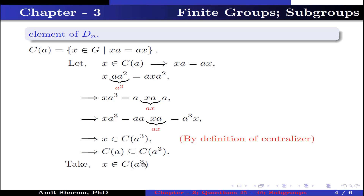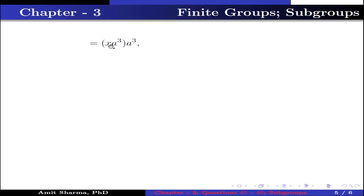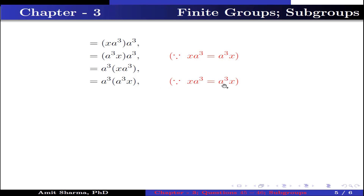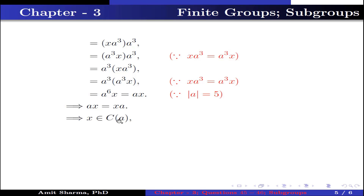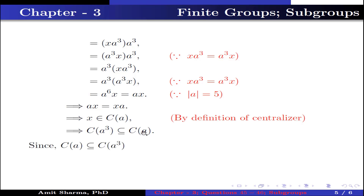Now take x belonging to the centralizer of A³, which implies xA³ equals A³x by the definition of centralizer. Then xA can be written as xA to the power 6, because the order of A is 5 — so A⁵ equals E, meaning A⁶ equals A. This equals xA³ · A³, which equals A³x · A³ (since xA³ equals A³x), which equals A³ · xA³, which equals A³ · A³x, giving A⁶x, which equals Ax since the order of A is 5. Therefore Ax equals xA, implying x belongs to the centralizer of A. Hence the centralizer of A³ is contained in the centralizer of A. Since each centralizer contains the other, the centralizer of A equals the centralizer of A³.